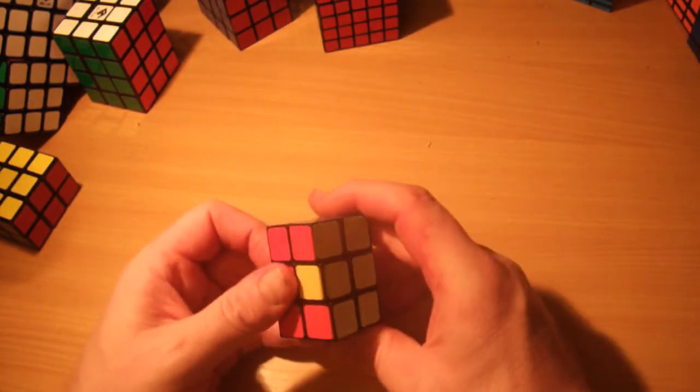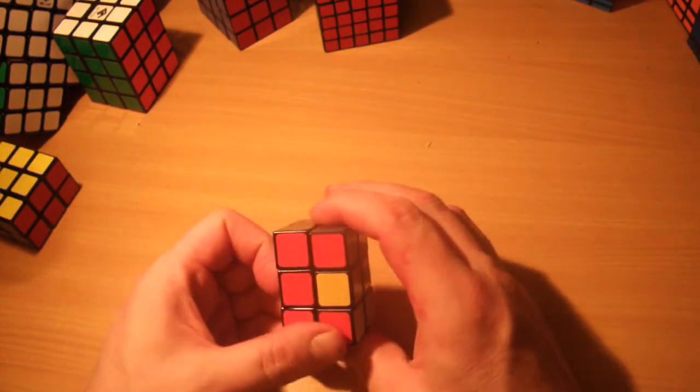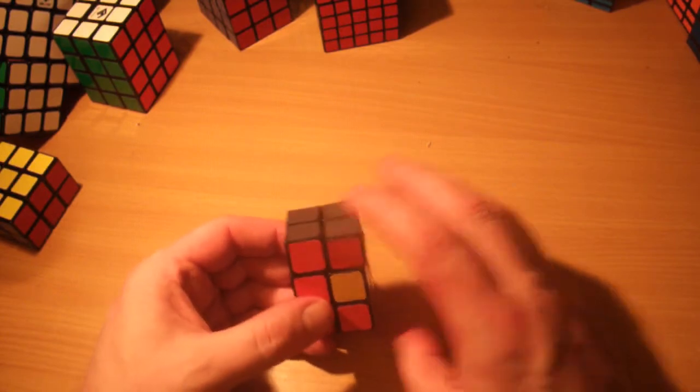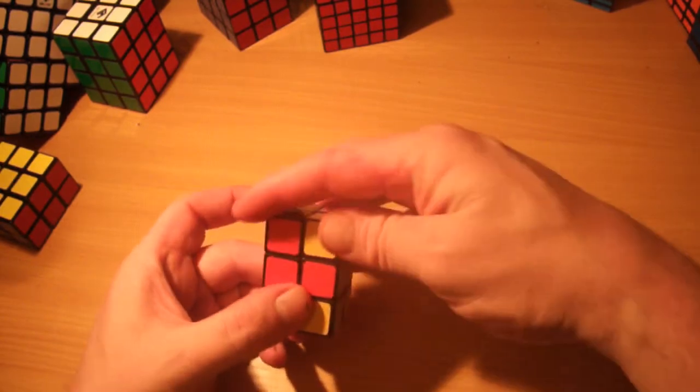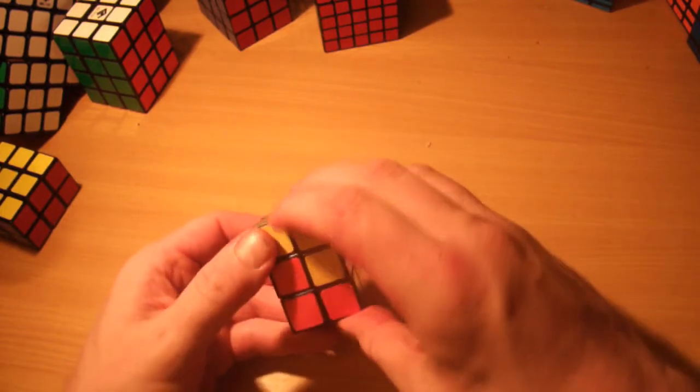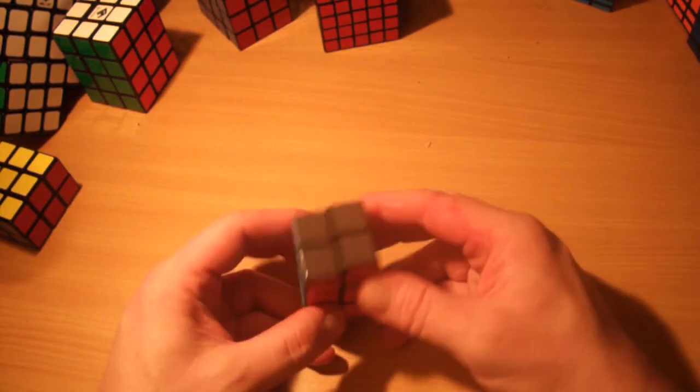And as you can see, we've actually got a little parity problem there. We basically got the last two centers to solve, which is very easy to fix. All you need to do is R U2 R U2 R U2, and that fixes it. So yeah, that's it, simple as that. I think you've seen every possible permutation in that, so it actually worked out quite well.